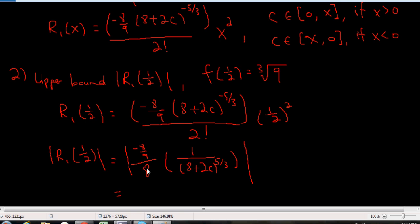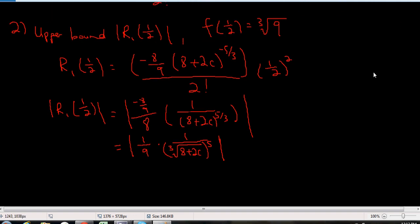So I can cancel the 8s and the 1 over 9, so I would have 1 over 9, but the negative can disappear because I've got absolute value signs. So 1 over 9 times 1 over (8+2c)^(5/3). And I'm rewriting it like this, so you might be able to see what I'm about to do next a little bit better. Now, we said before, c has to be a number between x and a. So we have x, that's half. We have a, it's 0. So c has to be a number between 0 and a half.